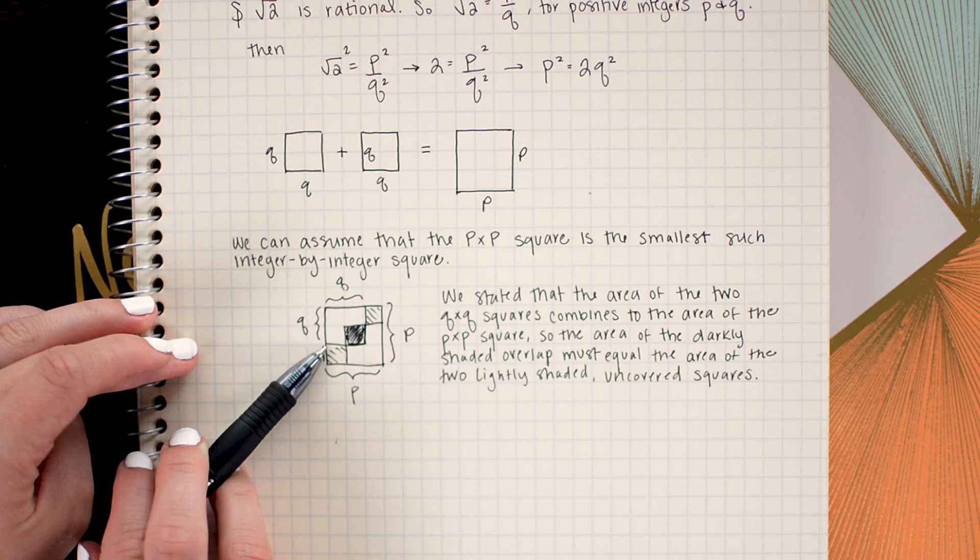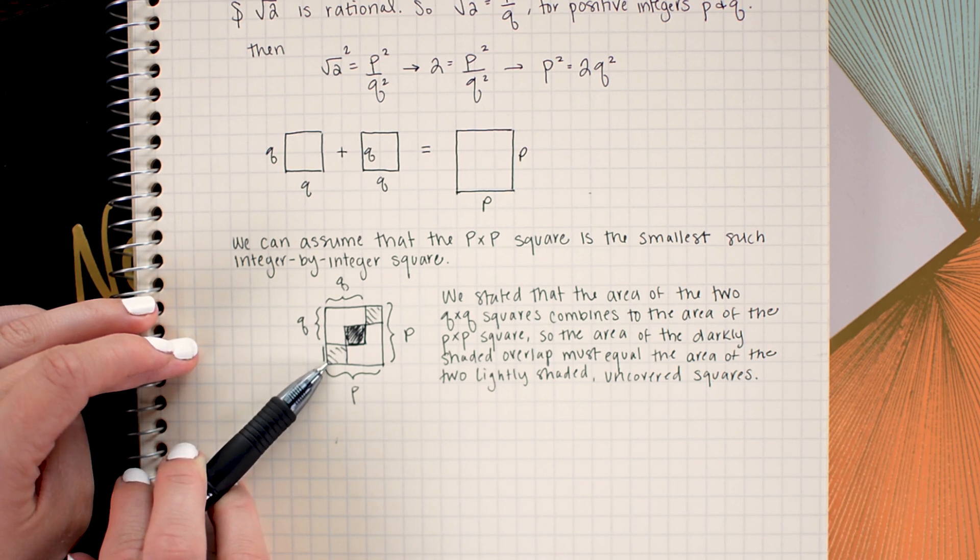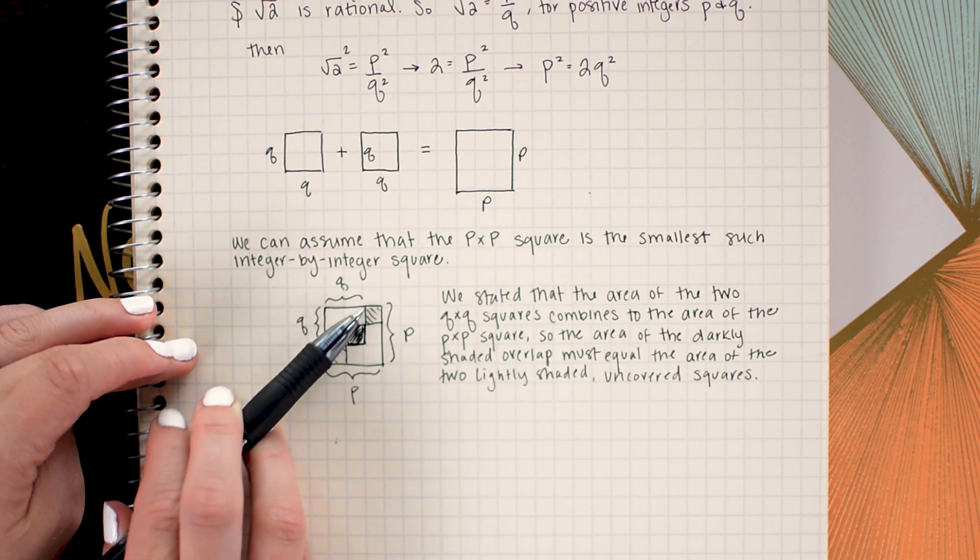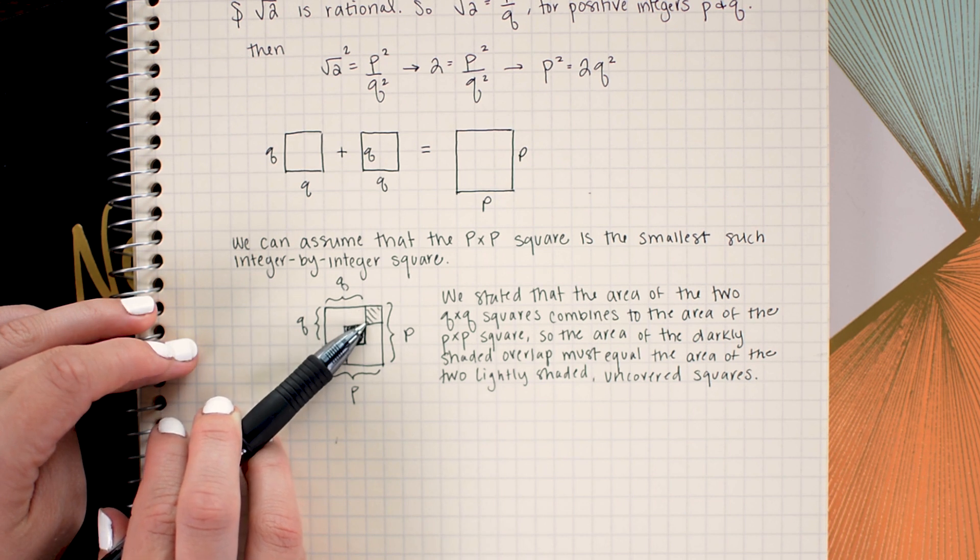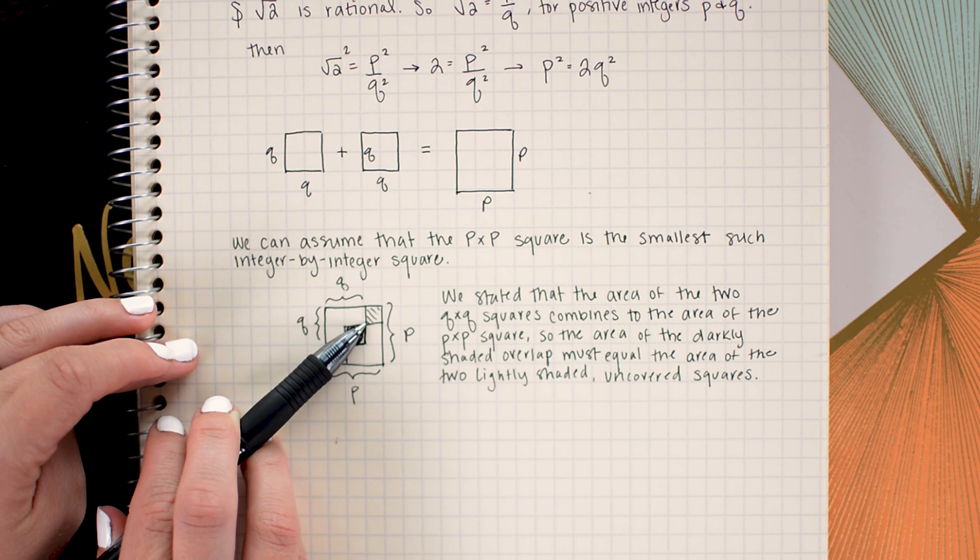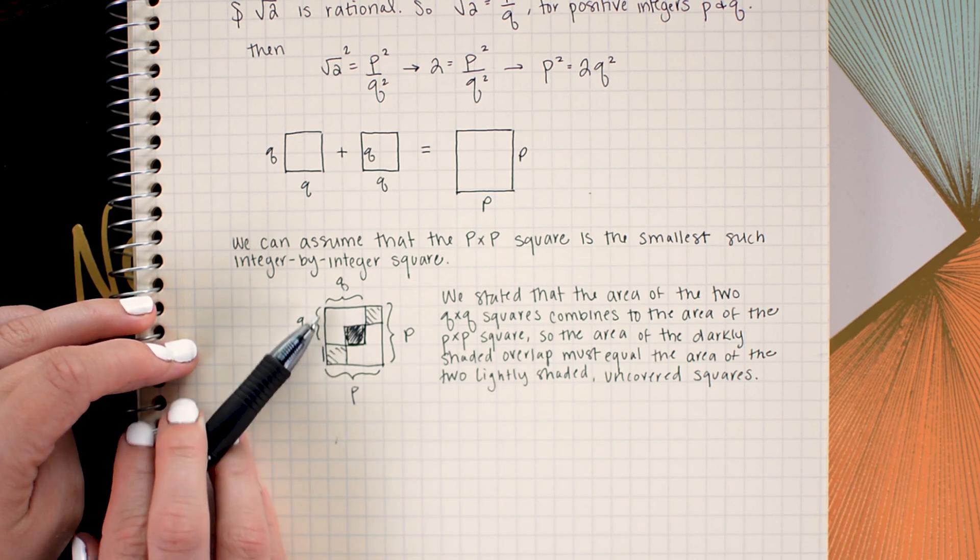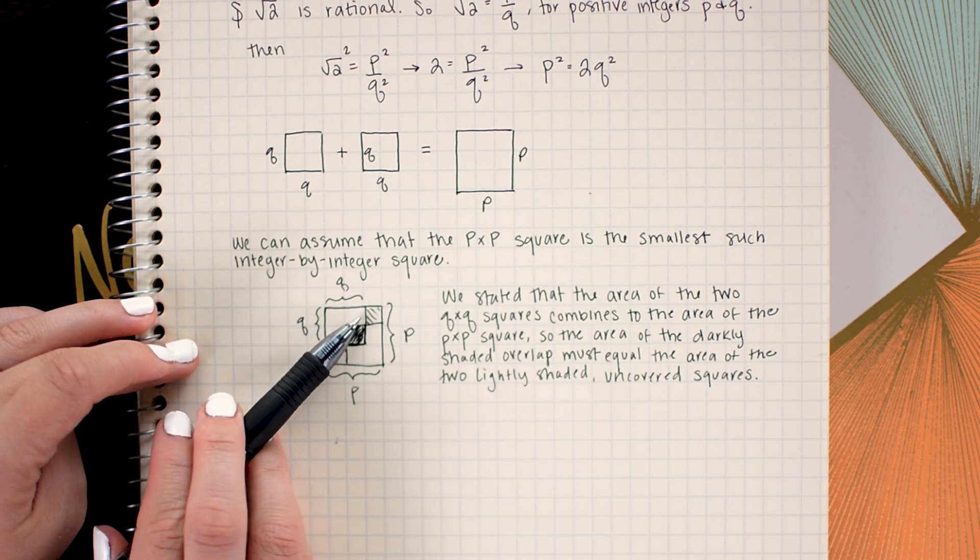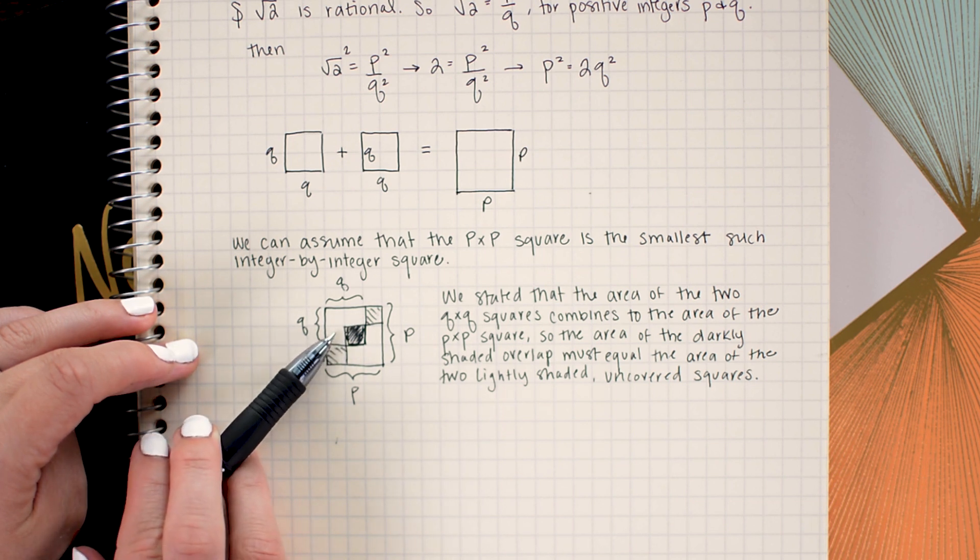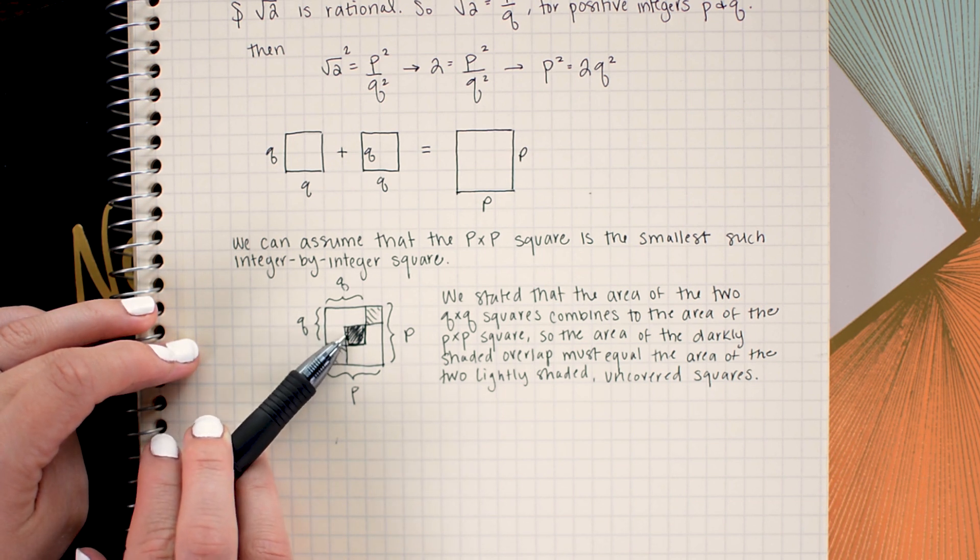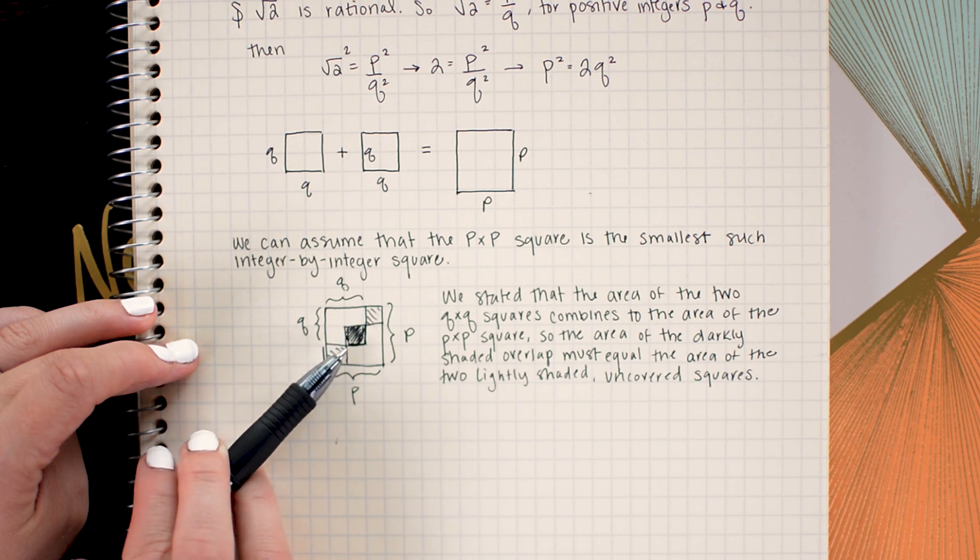and subtracting out a side length of this lightly colored square here and the side length of this lightly colored square here. And we just deduced that those were integers as well. So we have an integer minus an integer minus an integer. So that means that this square too is an integer by integer square.